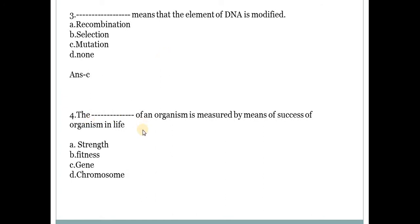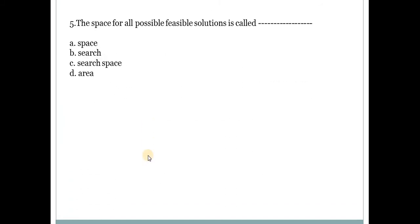The dash of an organism is measured by means of success of organism in life. Answer is B, fitness. Next one, the space for all possible feasible solution is called. Answer is C, search space deals with all feasible solutions.